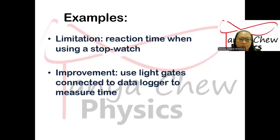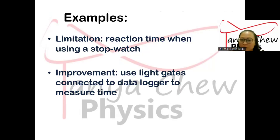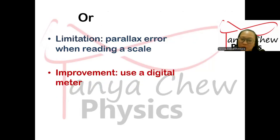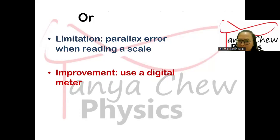Another example: if one of the limitations is reaction time when using a stopwatch — which is very inaccurate — the improvement is to use light gates instead. You have two gates, one at the starting point, and when the object passes through the second gate it stops the timer. Remember, light gates must be connected to a data logger to measure the time. Or maybe your limitation is parallax error when reading an analog ammeter or voltmeter. The improvement is to replace the analog meter with a digital ammeter or voltmeter — the reading will be more accurate.